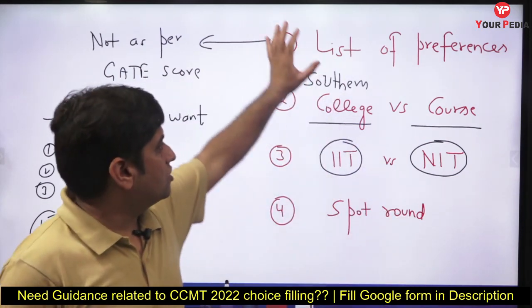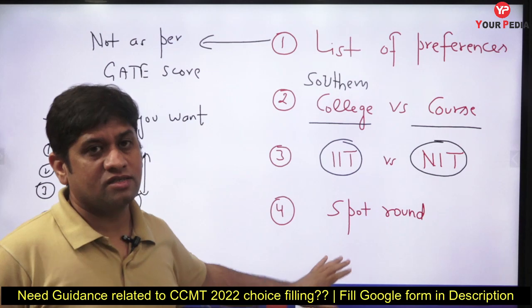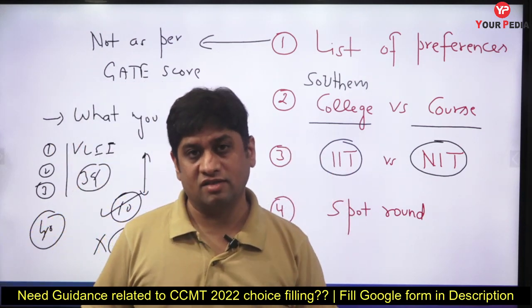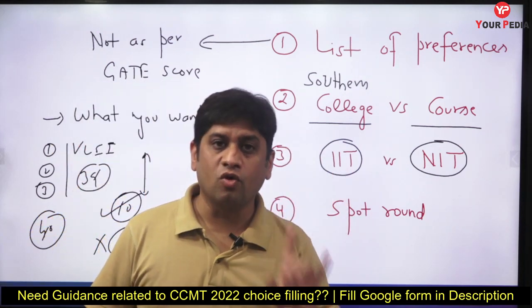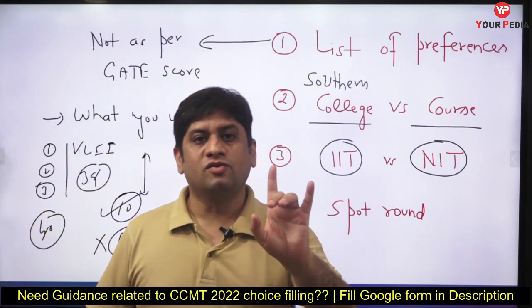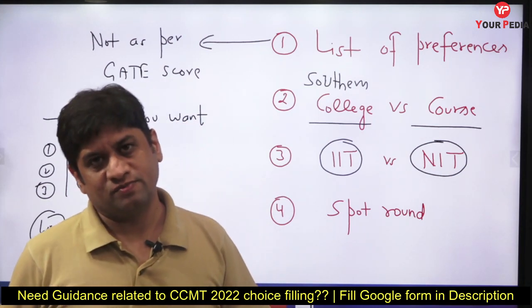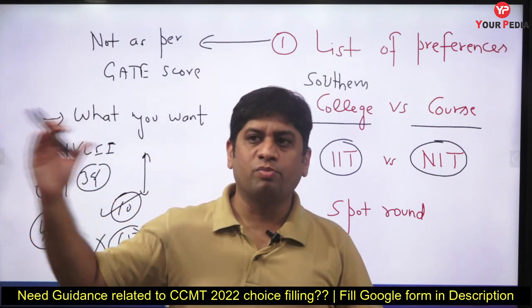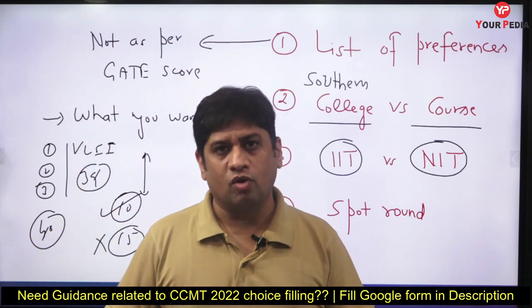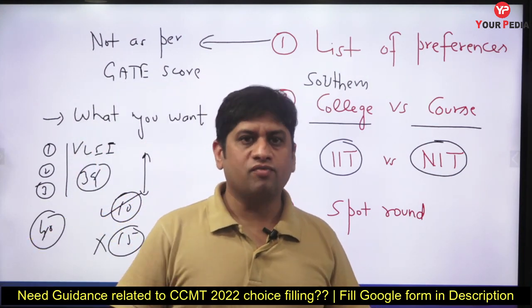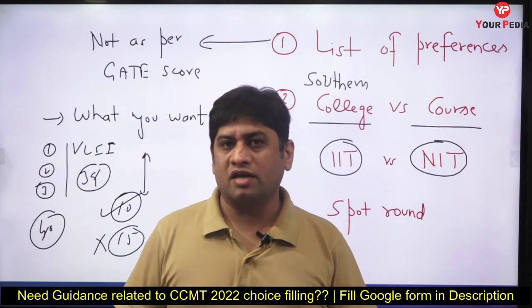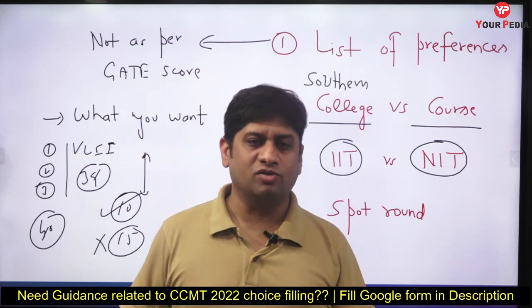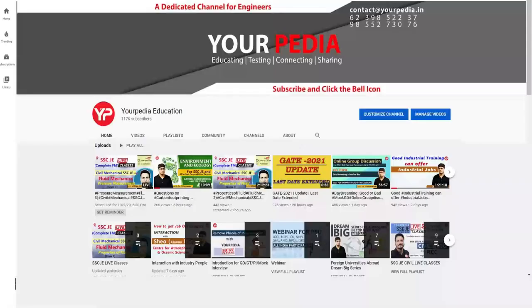In the entire CCMT process, these four things — preference order, college vs course, IIT vs NIT, and the spot round — are the most important and you should not miss them. Focus on these and you will surely make the best decision. The PDA team is ready to help — fill the form and our executive will get back to you for mentoring and counseling.